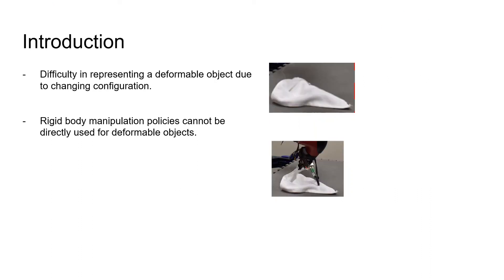Fabric manipulation is a challenging problem due to the difficulty in representing a deformable object. Rigid bodies, unlike deformable objects, can be represented by their mass, shape, and physical properties as they remain fixed with a sequence of manipulations. However, this is not the case for fabric. Thus, learning an abstract representation becomes vital in successfully solving a deformable object manipulation task.